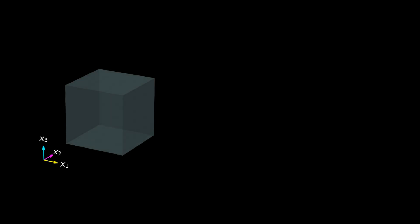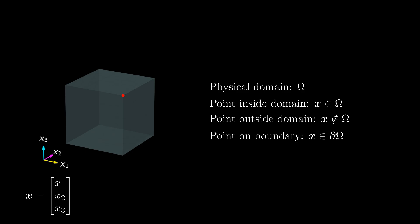Any object that is modeled within the framework of Continuum Mechanics occupies a certain domain in this three-dimensional space. This domain is often denoted by capital Omega. If a point x with its three components being x1, x2 and x3 lies within the domain we say that x is an element of Omega. If not, we say that x is not element of Omega. Points that are right at the border of the domain get a special treatment. We say that they are element of the boundary of Omega, which is denoted by partial Omega.